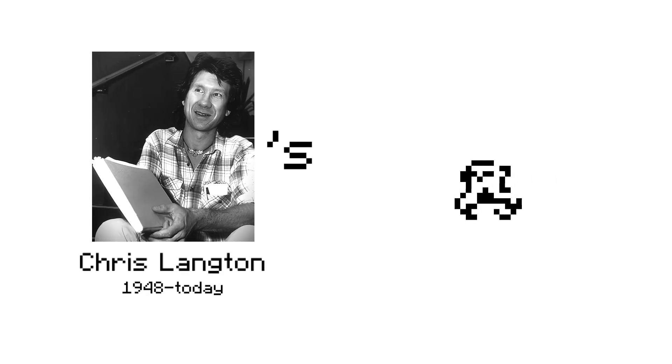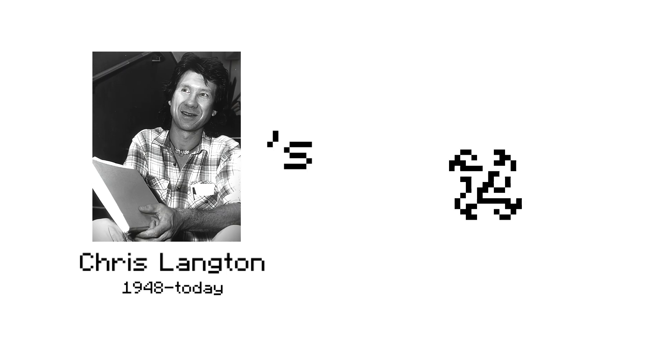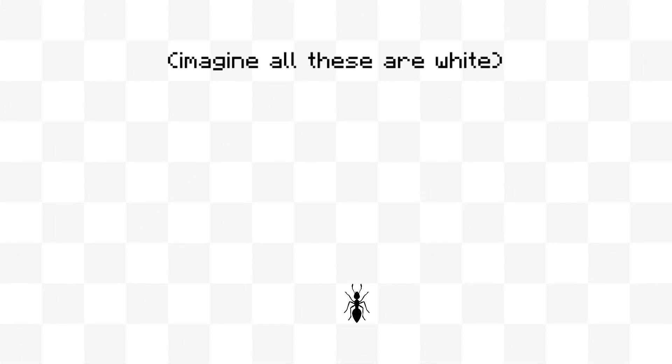Langton's Ant was created by Chris Langton in 1986. It's a great example of emerging behavior in computing. The idea is simple: we have an ant that moves around on a grid of white and black tiles. Each time it encounters a white tile, it turns right.